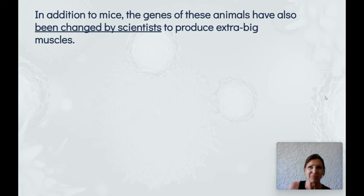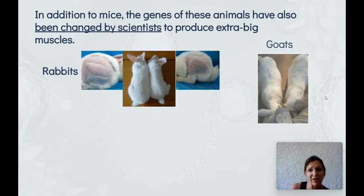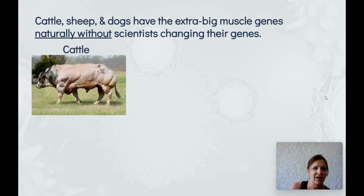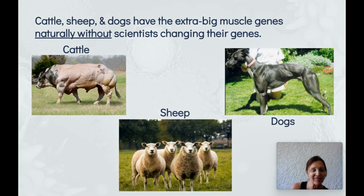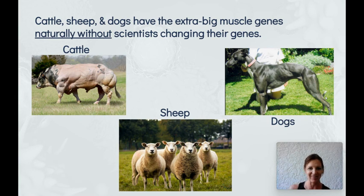In addition to experiments with mice, scientists have also changed the genes of other animals to get extra big muscles — including rabbits, goats, and fish. However, many animals have the extra big muscle gene naturally without scientists changing it, including cattle, sheep, and dogs. On our driving question board, one thought was that these cattle might be genetically modified, but they were not — the myostatin gene that causes extra big muscles occurs naturally in the cattle.